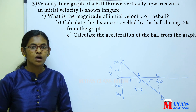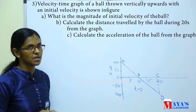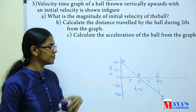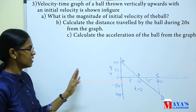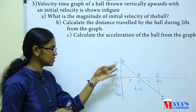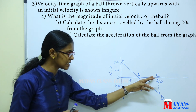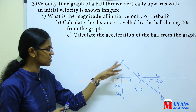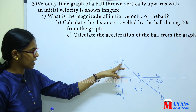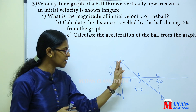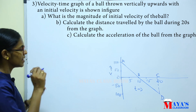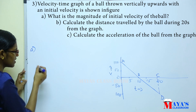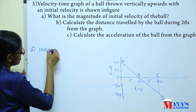What is the magnitude of the initial velocity? Looking at the velocity-time graph with points A, B, C marked, the initial velocity is 100 meters per second.